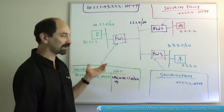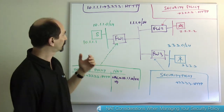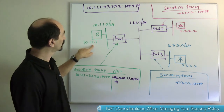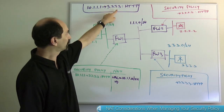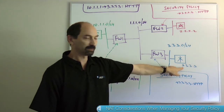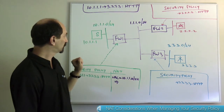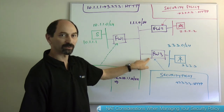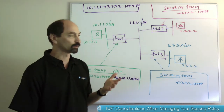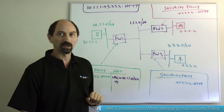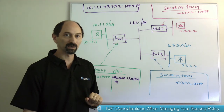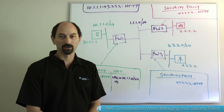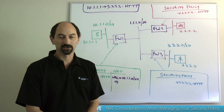You look at your network diagram and figure that 10.1.1.1 is in the green network and 3.3.3.3 is in the blue network, so you need to touch firewall one and firewall three, and write the rule as requested by the application owner to allow the requested traffic. That's all fine if there is no address translation going on.